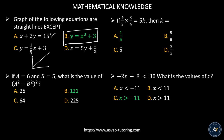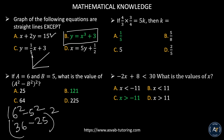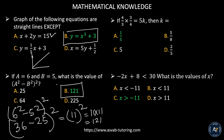If a equals 6 and b equals 5, what is the value of (a squared minus b squared) squared? Plug in the values: 6 squared minus 5 squared equals 36 minus 25 equals 11. Then 11 squared equals 121. The correct answer is letter B.